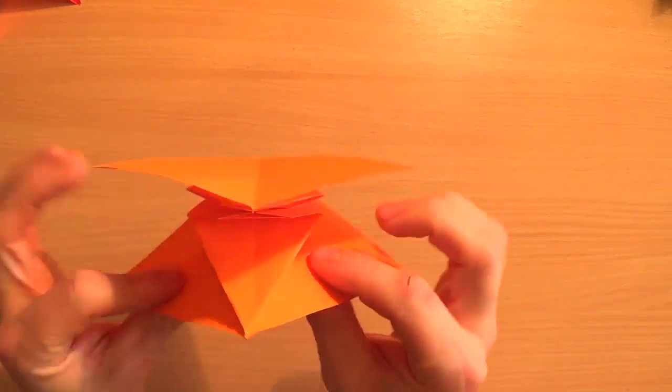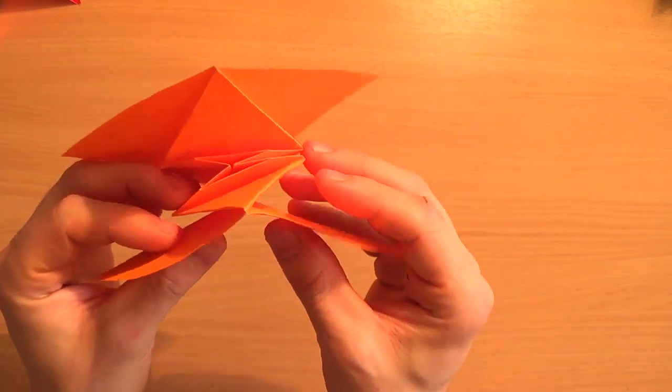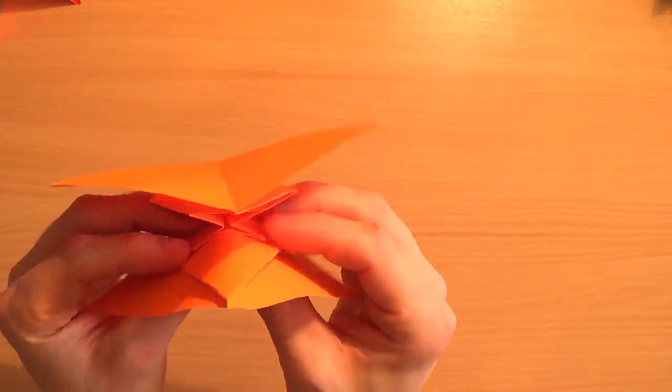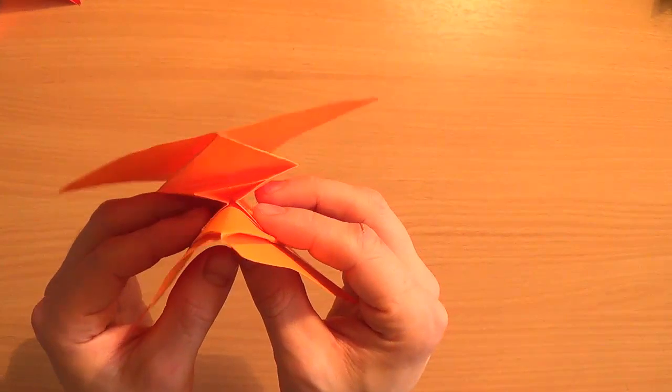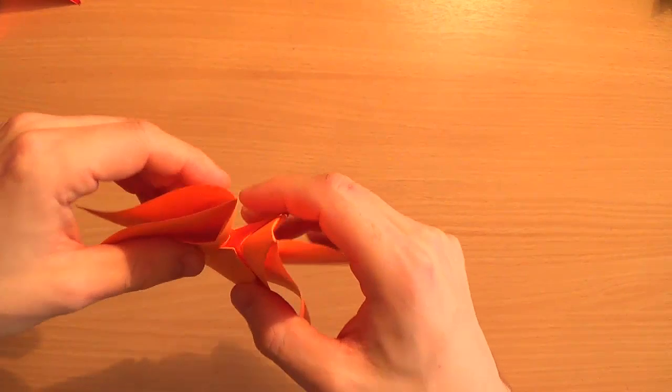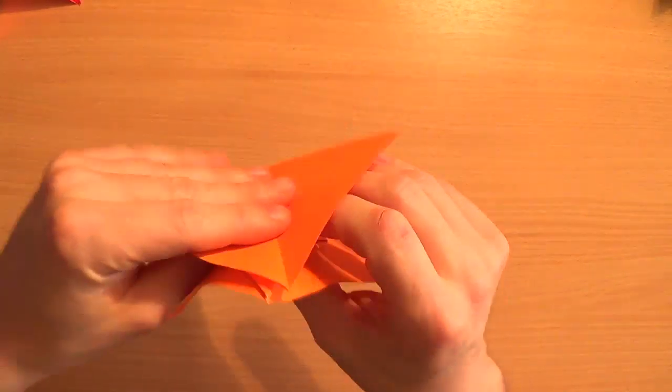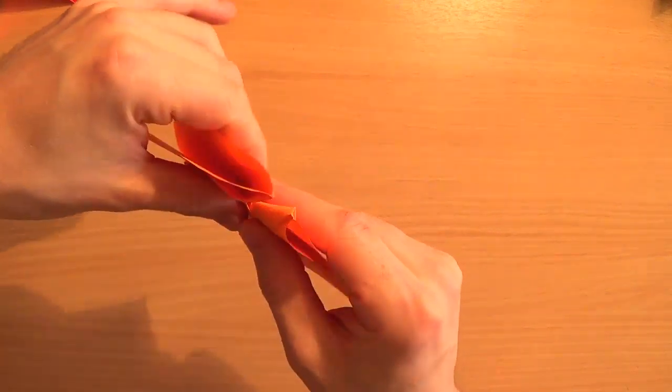So what you've ended up with now is four outside flaps and four inside flaps. Holding two outside flaps and two inside flaps on one side, and two outside flaps and two inside flaps on the other side. You're going to invert it. So instead of it being that way, it's now that way.